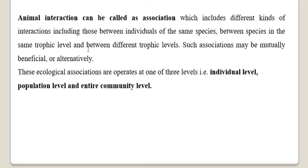These ecological associations operate at three levels. First, at the individual level, where interaction takes place between two members — maybe the same species or different species. Then, when interaction takes place between large numbers of individuals of two groups, it becomes the population level. When different kinds of populations interact with one another, it becomes the community level.